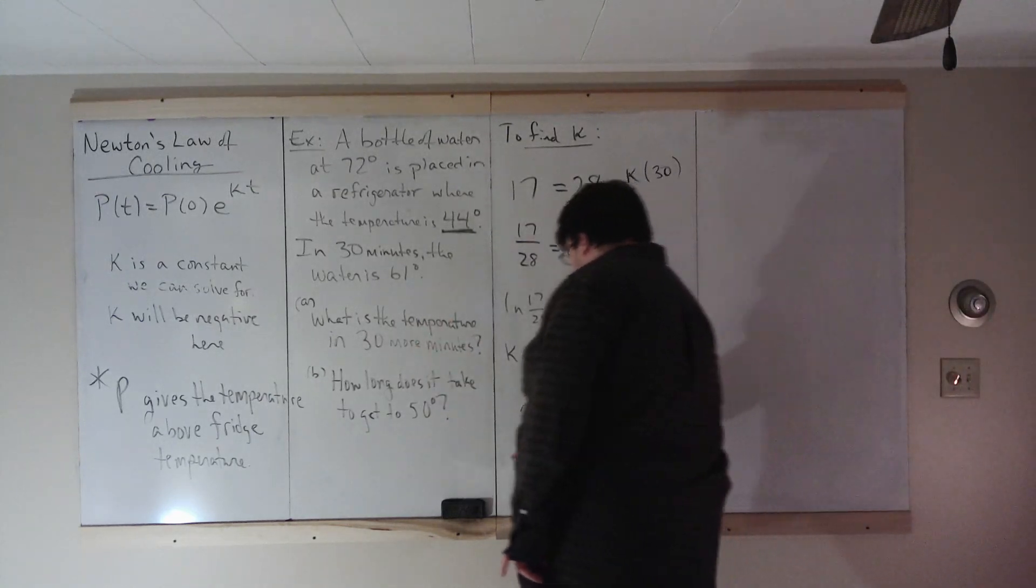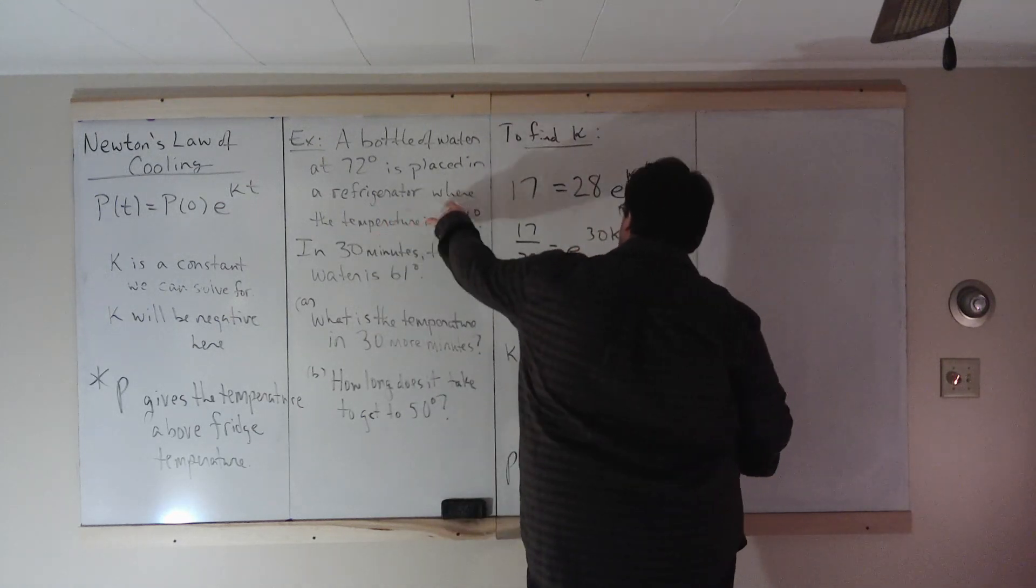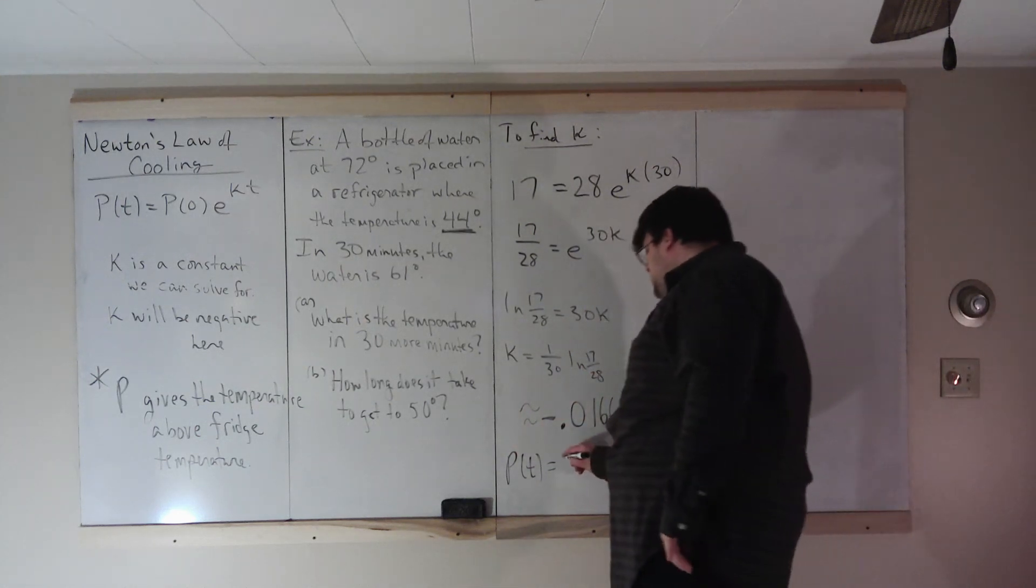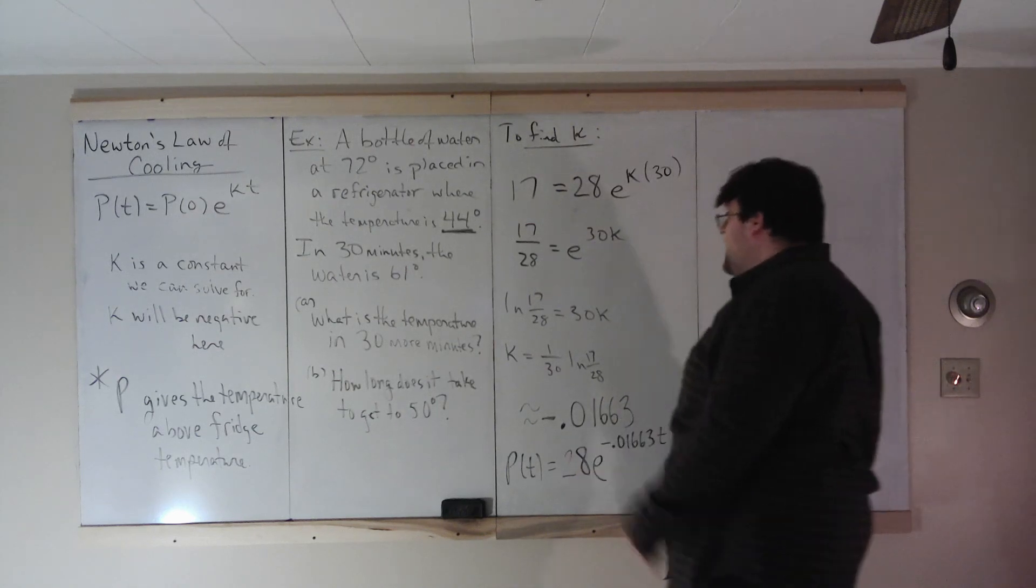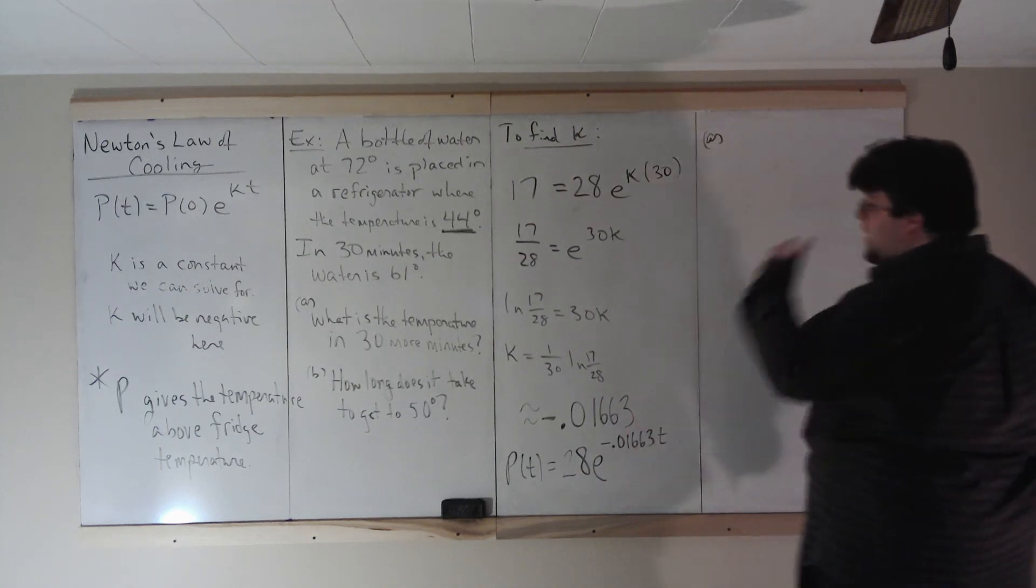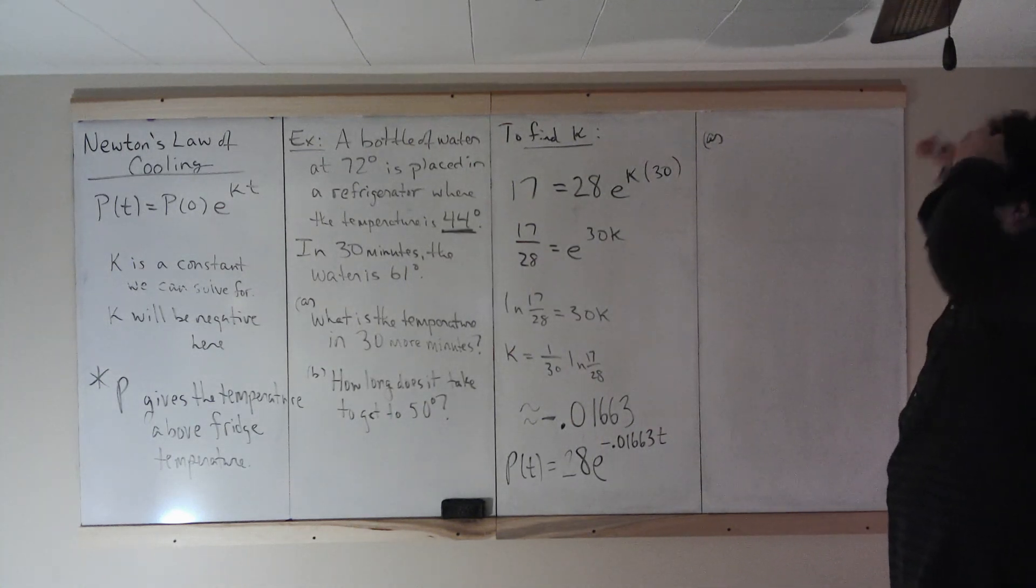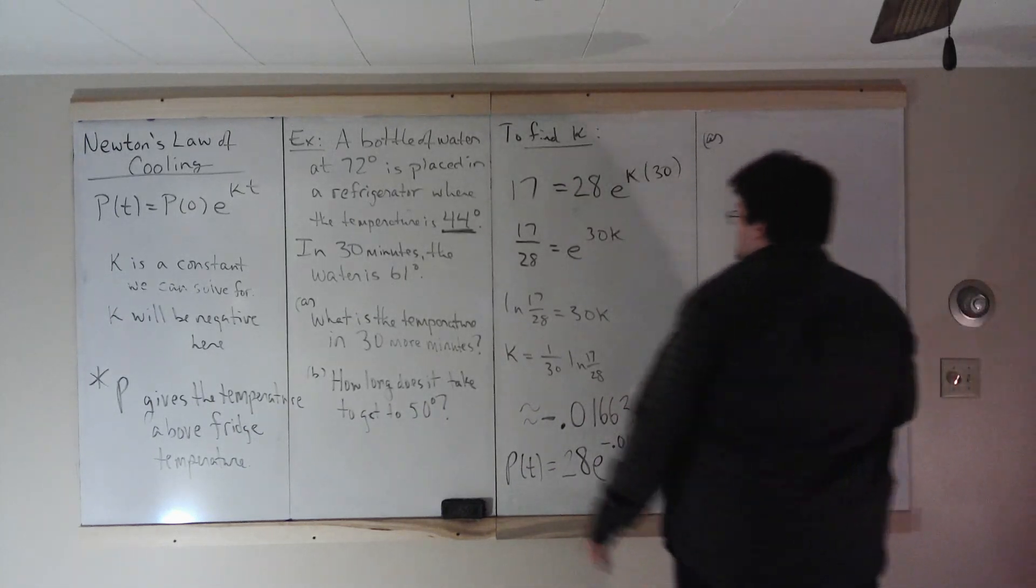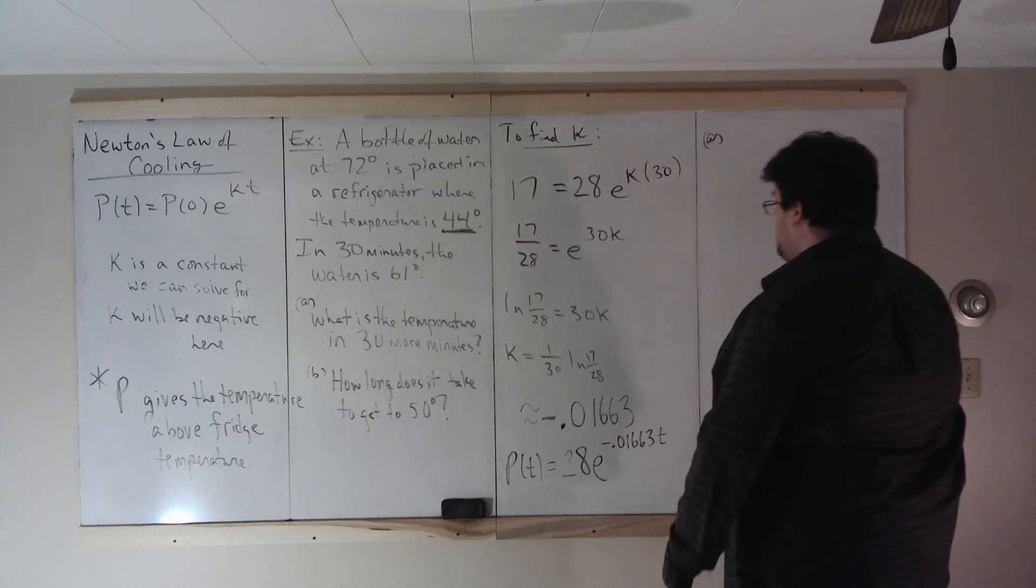So we have our constant K. We can find an equation. So an equation P(t) is the initial temperature, not 72, the initial temperature is 28 above 44. 28 E to the K so negative point zero one six six three times T. And now with our equation, with these, any of these, I'm not going to do anything weird with time units. I'm going to be consistent with time. In this, our 30 is in minutes so our time units here are in minutes. Our constant K has minutes incorporated to it.